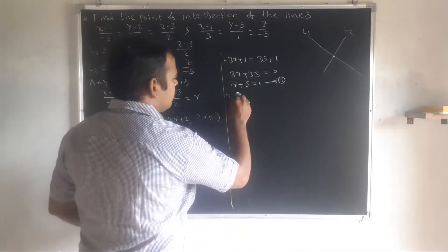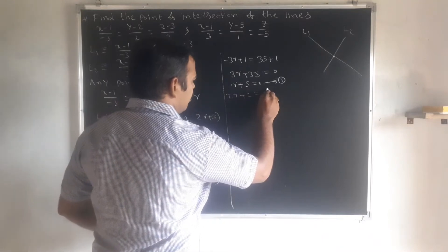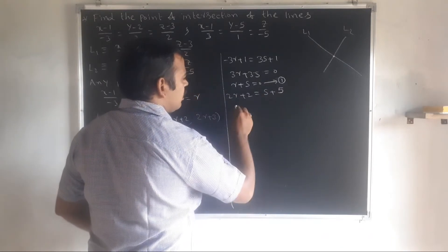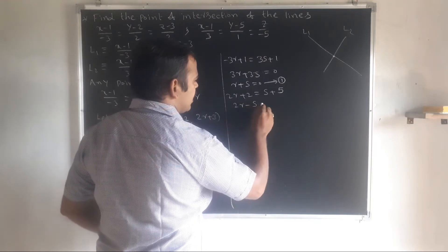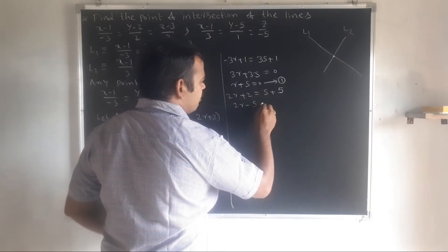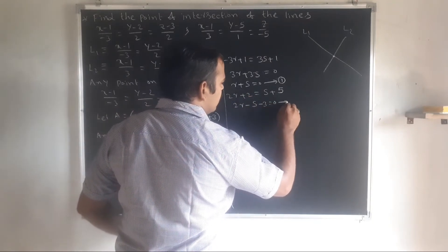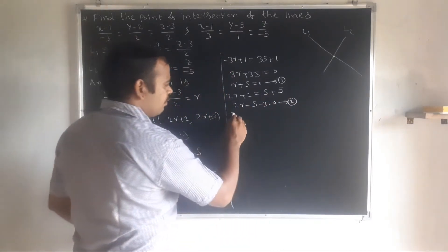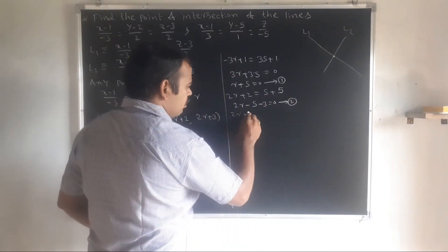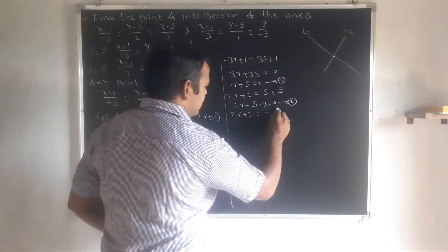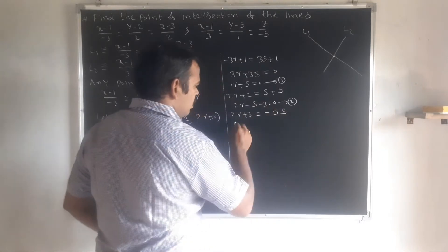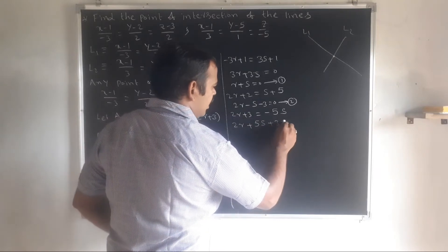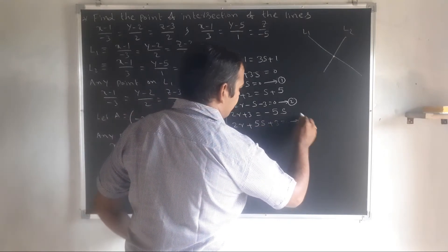Equating y-coordinates: 2r plus 2 equal to s plus 5, giving 2r minus s minus 3 equal to 0. This is equation 2. Equating z-coordinates: 2r plus 3 equal to minus 5s, giving 2r plus 5s plus 3 equal to 0. This is equation 3.